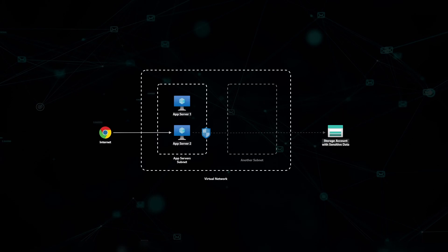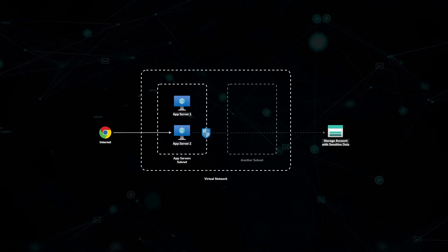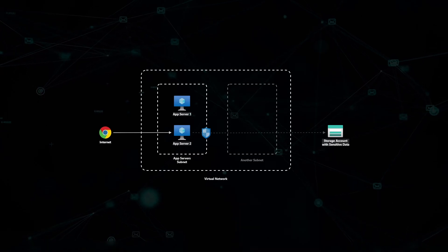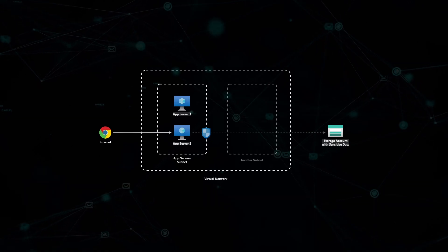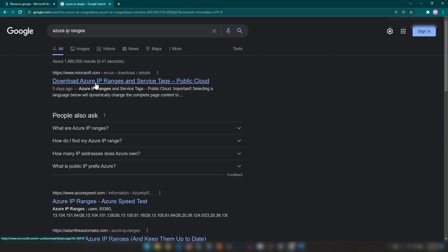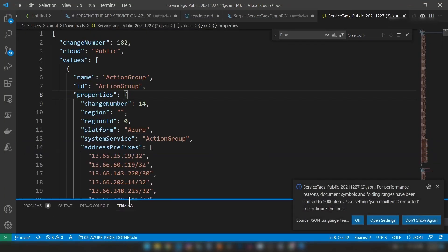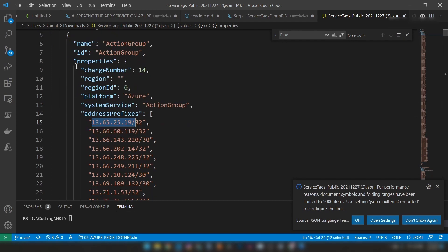This is where service tags come in. Instead of specifying every IP address of a platform-as-a-service resource in your network security group, you can add a service tag that represents the service. If you Google for Azure IP ranges, the first result is Azure IP ranges and service tags. If you go into that page and download the JSON, it contains the address prefixes for each of these service types.